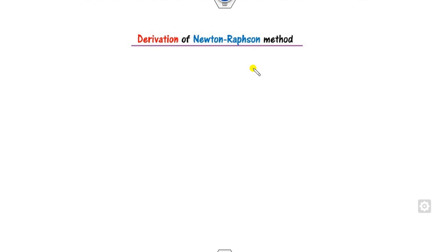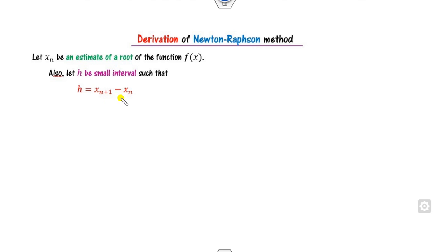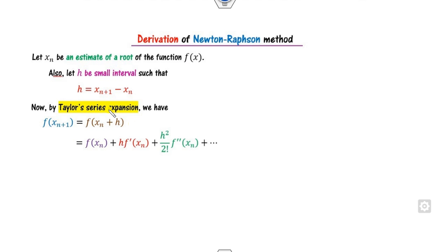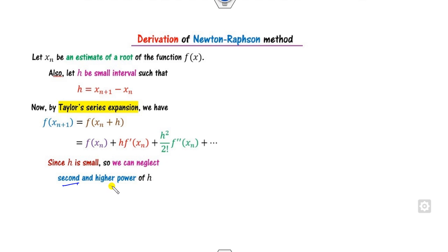For that, we will derive the Newton-Raphson method in an easier manner. Let xₙ be the estimated root of f(x) = 0 and h be a very small interval between two consecutive solutions. Then we can find the series expansion using the Taylor series. Since f is a continuous function and h is a very small interval, we can apply the Taylor series expansion. Since h is very small, we can neglect the higher-order terms — the second-order derivative and second power of h.